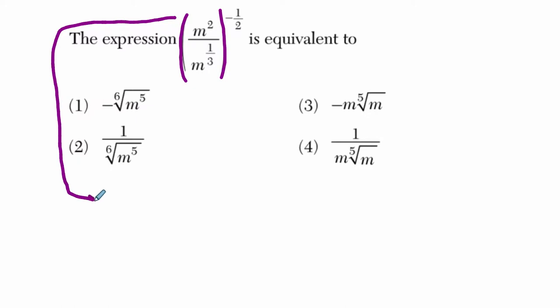Always simplify before you complicate. So right here we have m to the second over m to the one-third. That's going to be m to the two minus a third. In other words, all I did was subtract these two exponents. When we divide two equal bases, we subtract the exponents.